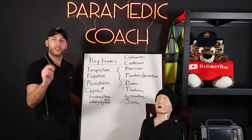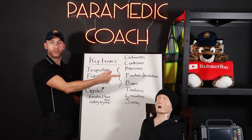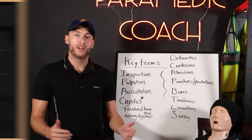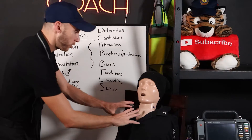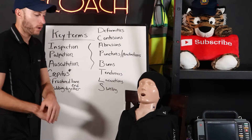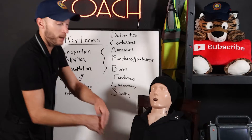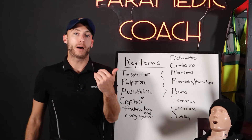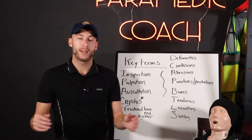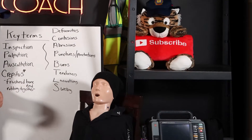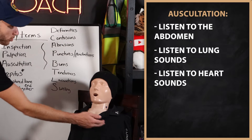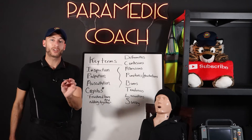We have to know these key terms. Three terms you need to know about. First is inspection — inspection means simply looking at the patient. Palpation — like if I was going to palpate the patient's abdomen on a physical exam, that's palpation. And finally, auscultation. That could be a lot of things — for example, I could listen to the abdomen, I can listen to lung sounds, I can listen to heart sounds. That's auscultation.